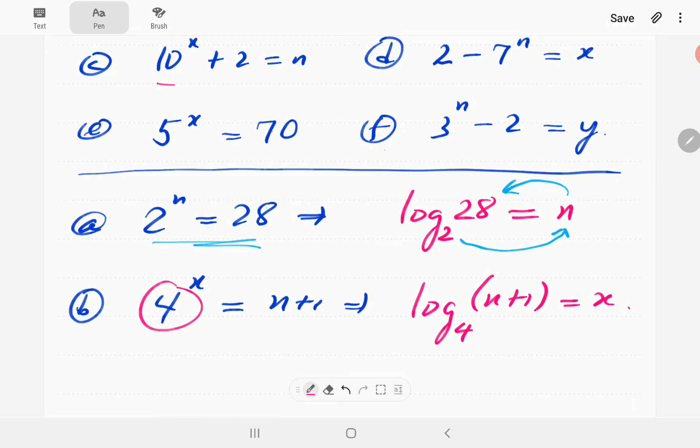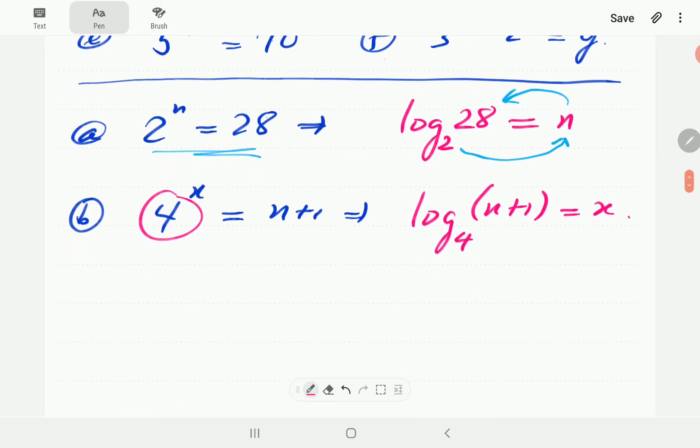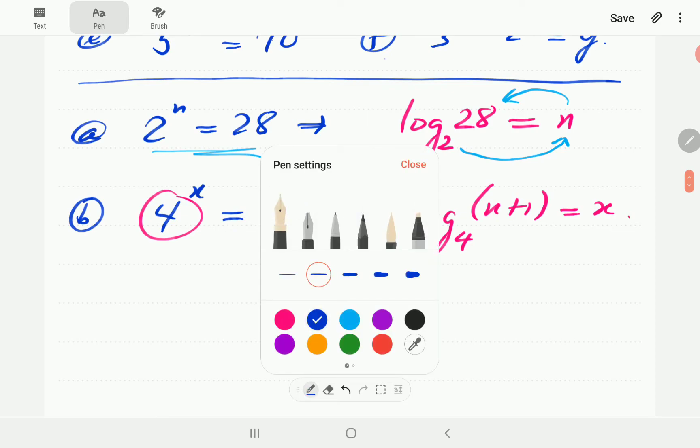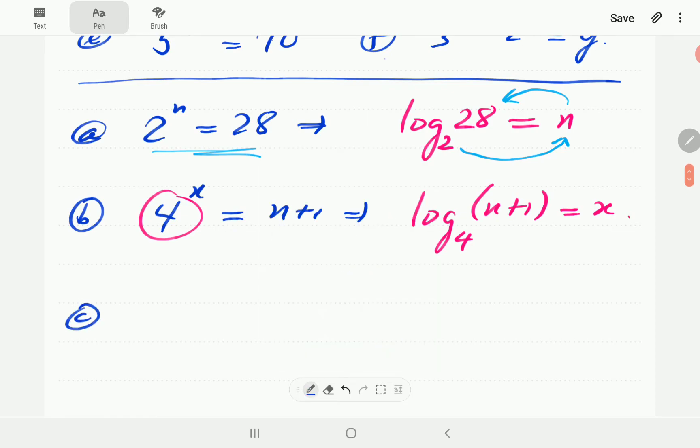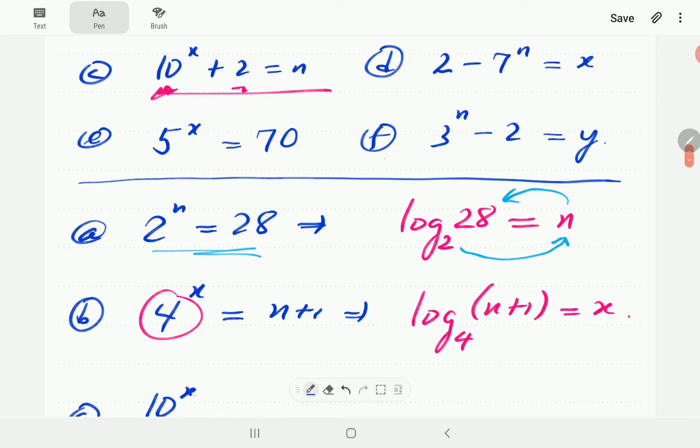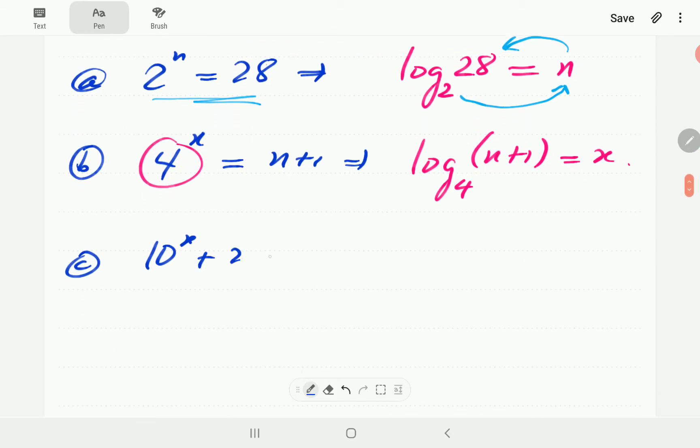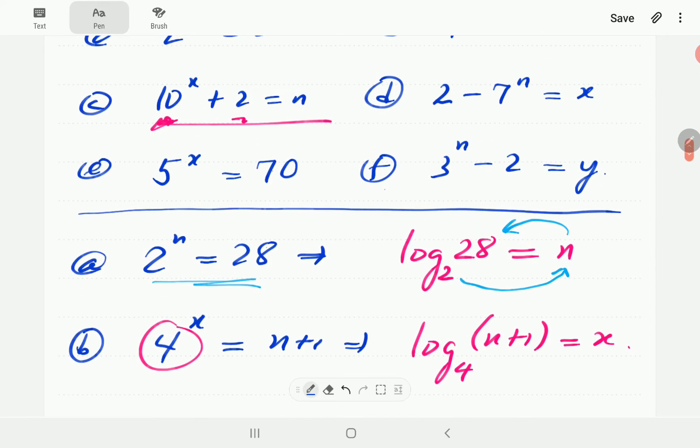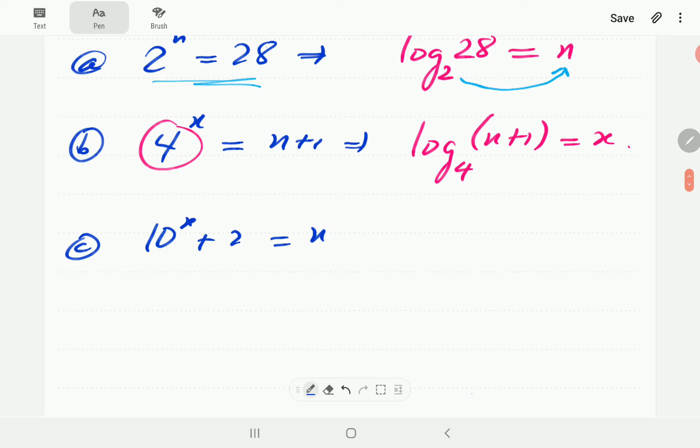In c, we have the exponential term here and another term here. So similarly, we did something similar with the log terms. Even here, if the exponential has got in its company another term, then what we do is we first isolate the exponential term before we convert to logarithmic form.